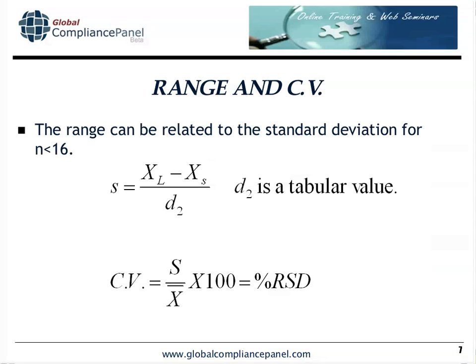The range of a set of numbers is the largest number minus the smallest number. If this is divided by a number called D2, you will then get the standard deviation for situations where the number of replicates that you have are smaller than 16. D2 here sounds like a mysterious number, but...